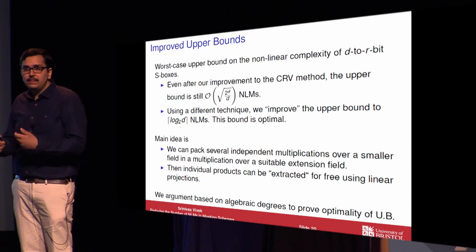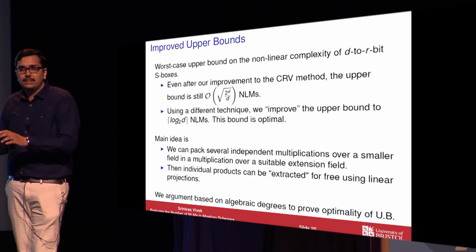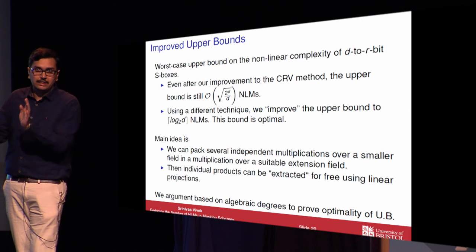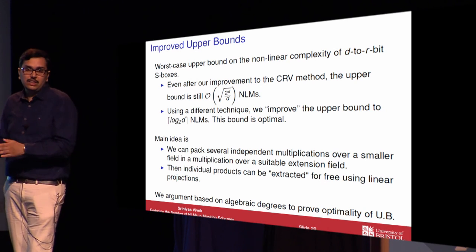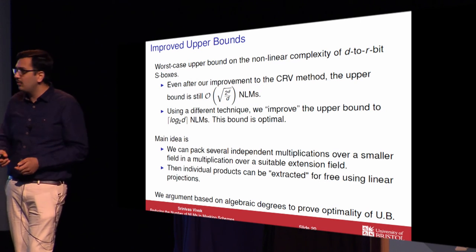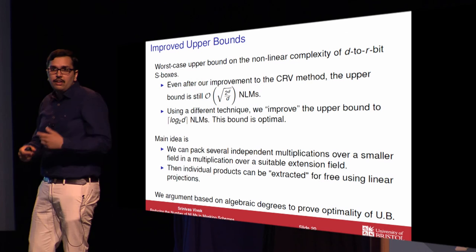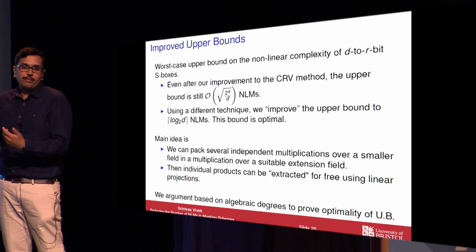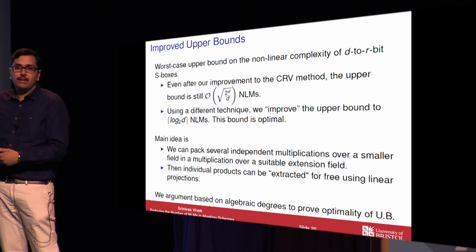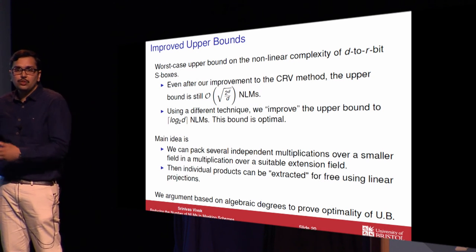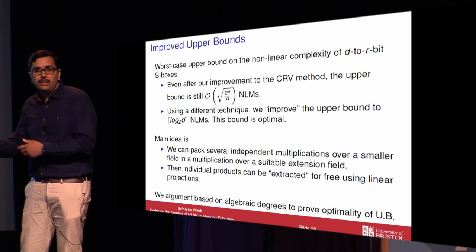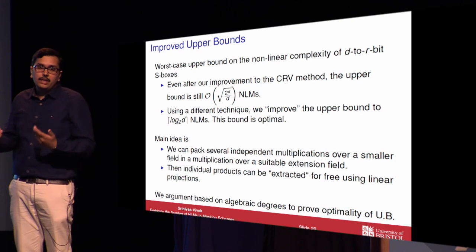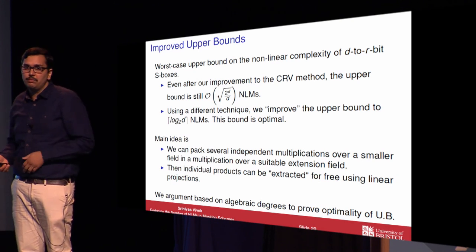We show that this logarithm-of-D bound is optimal, and our argument is based on algebraic degree. The algebraic degree of a polynomial is the maximum Hamming weight of its exponents corresponding to non-zero coefficients. When we perform a multiplication, the algebraic degree can at most double. So in order to reach degree D, we need at least logarithm of D multiplications.